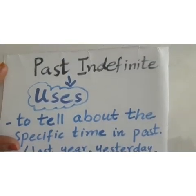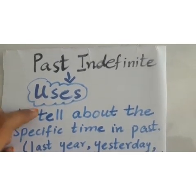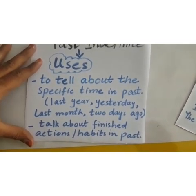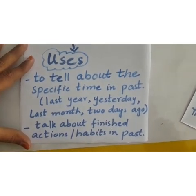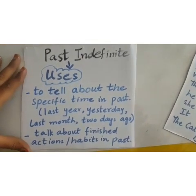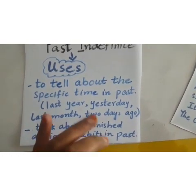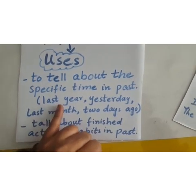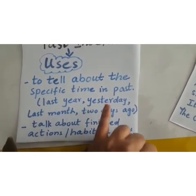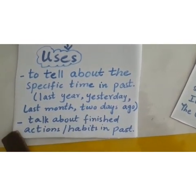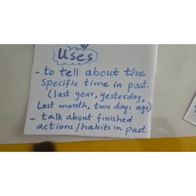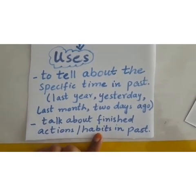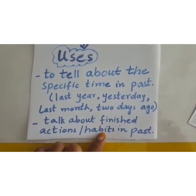Now let's come to the second type of tense: past indefinite tense. When do we use it? We use past indefinite tense to tell about a specific time in the past — when we are going to tell about an action that is over. The key words mostly used in past indefinite tense are: last year, yesterday, last month, two days ago. Secondly, we use it to talk about finished actions, habits in the past — any action or habit that has ended.